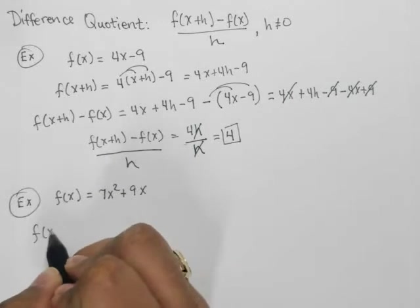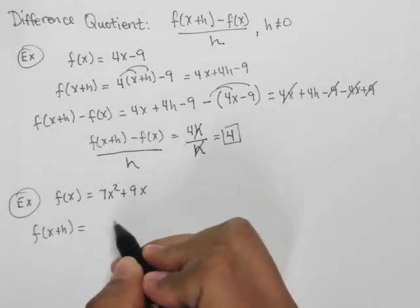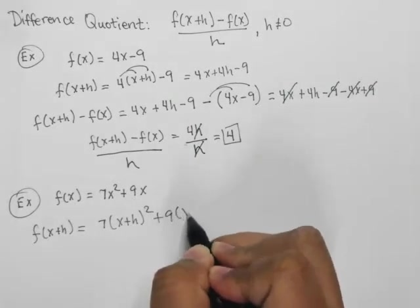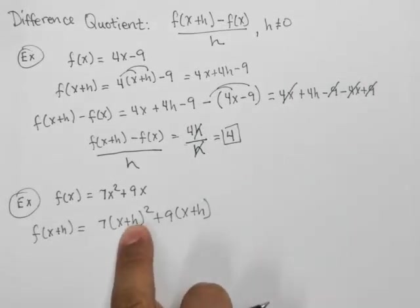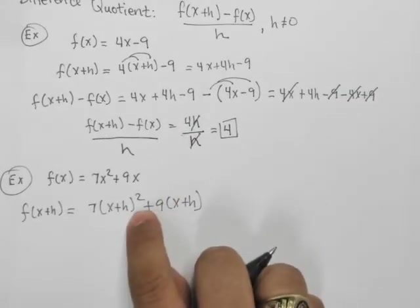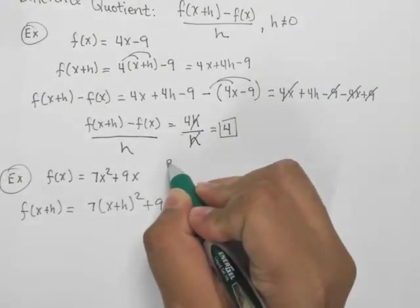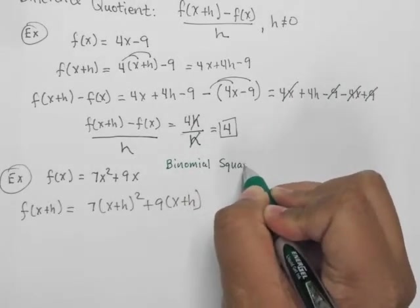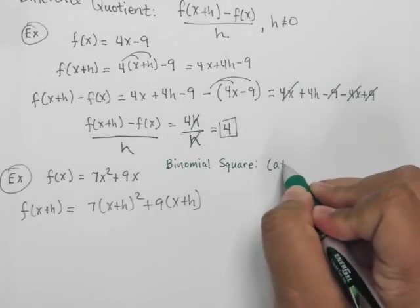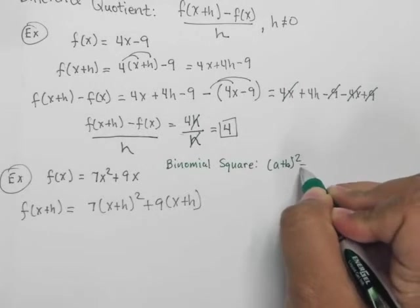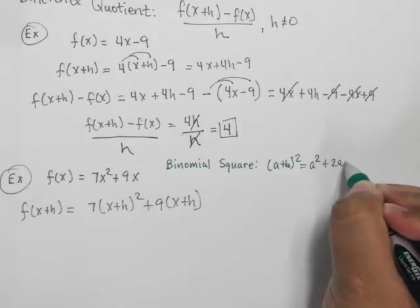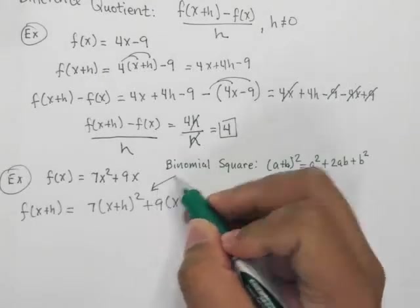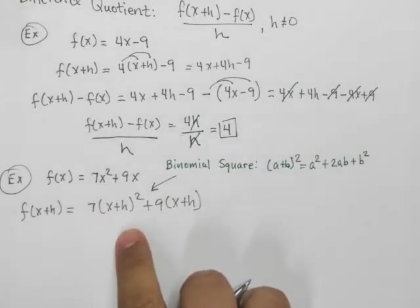So let's find f of x plus h. This one's a nice one. I really like this one. This one's kind of fun. We plug in the x plus h there. Now, this right here is a binomial square. So I'm going to write a note to you that that is a binomial square. A binomial square looks something along the lines of this. I will put a link in the description for my video on the binomial square. This is just a concept in algebra that you need to remember, and it's very useful in calculus.